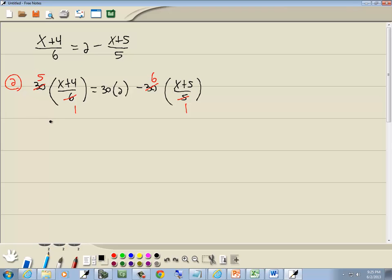Let's write down what we have left before I multiply it through. We've got 5 times x plus 4 equals 30 times 2 minus 6 times x plus 5.